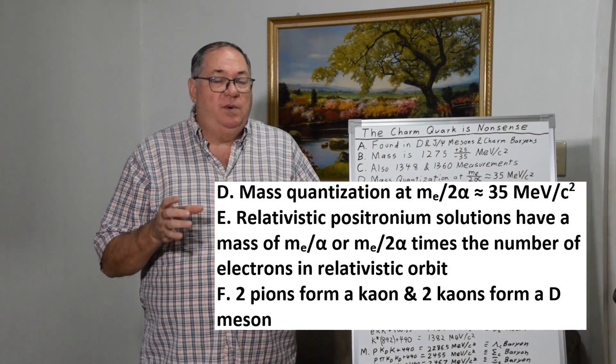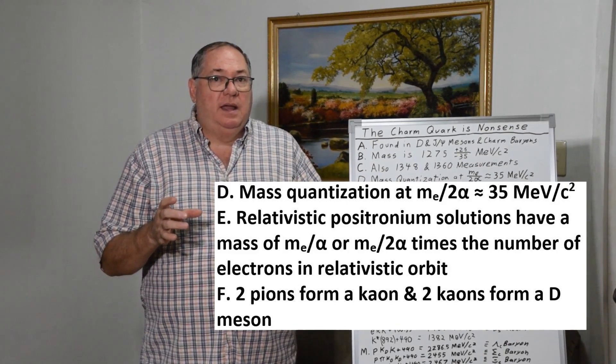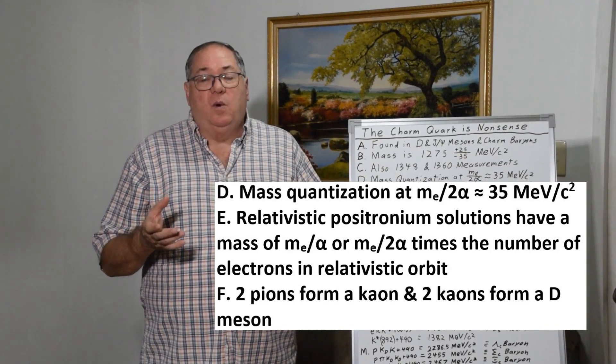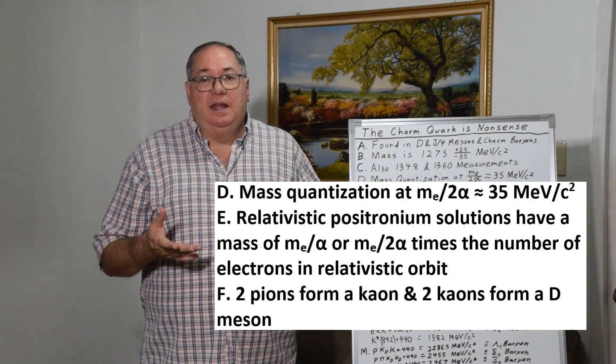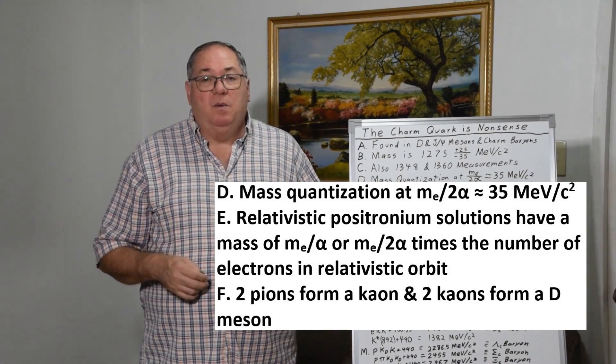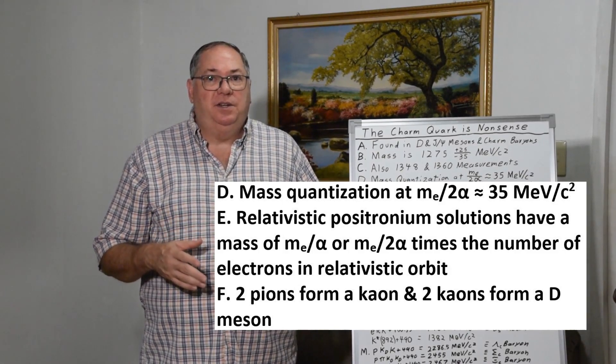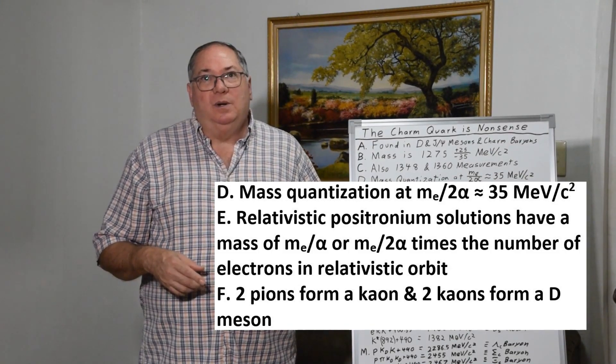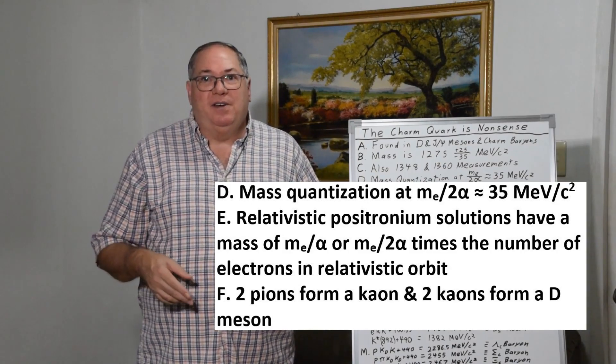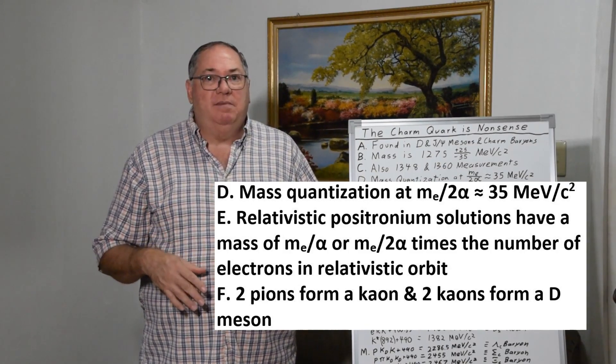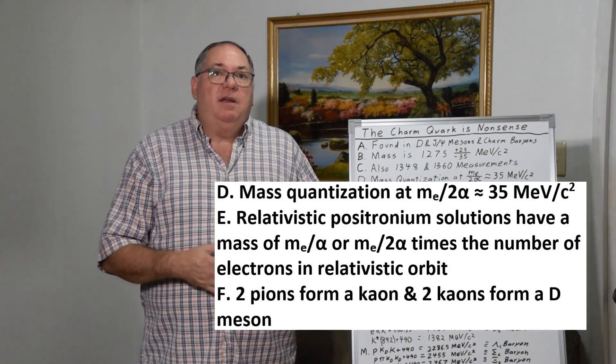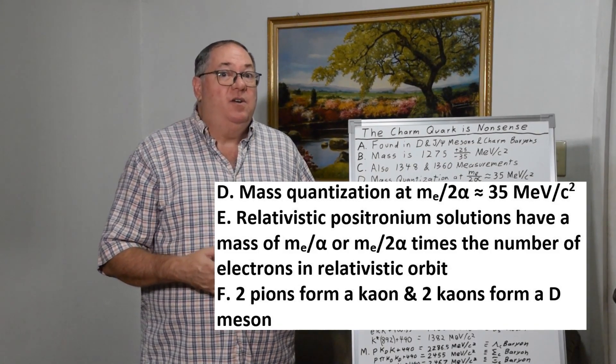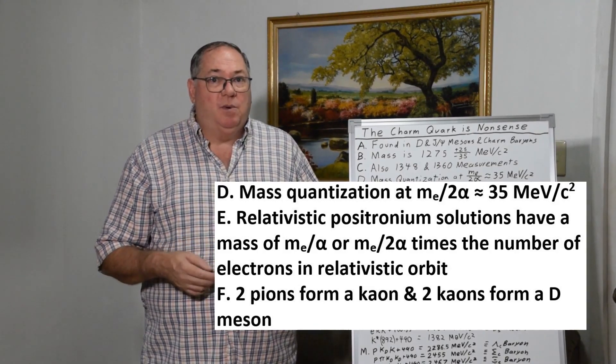And what Sternglass found out is the total energy for the pair is around 140 MeV, or 70 MeV per particle, which actually breaks down to the mass of the electron divided by the fine structure constant, or 137 times the mass of the electron gives you approximately 70.